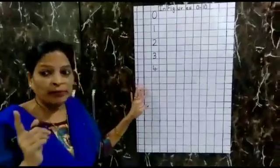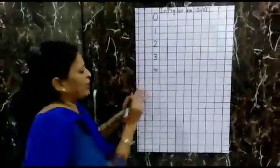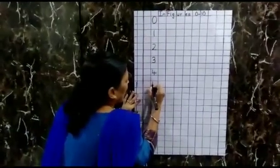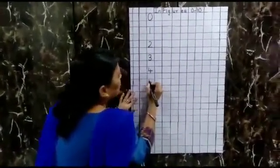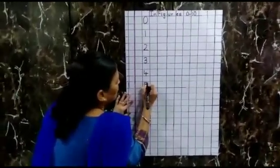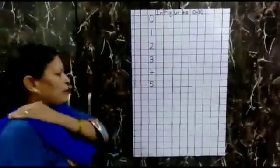Now after 4, what number comes? 5. Very good. Small standing line and draw a curve till the bottom. And from the small standing line, draw a slipping line. That makes number 5.